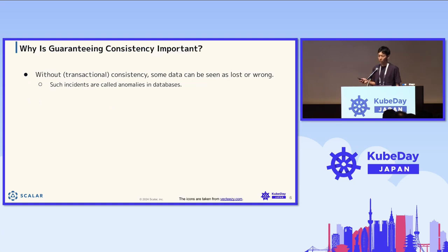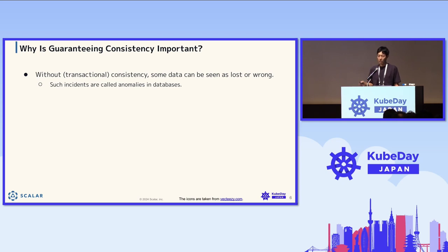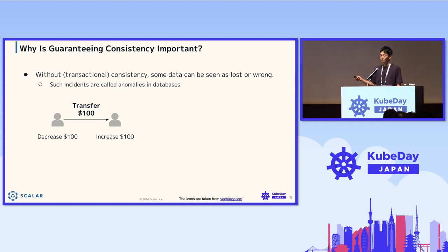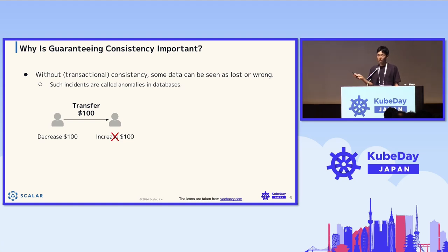Why is it so critical? Without transactional consistency, some data can be seen as lost or wrong — these incidents are called anomalies in databases. For example, consider a transfer operation in a banking application: it decreases an amount from one account and increases it in another. If the increase operation fails during processing, and it's not properly handled, you're going to lose the money — the money is gone.